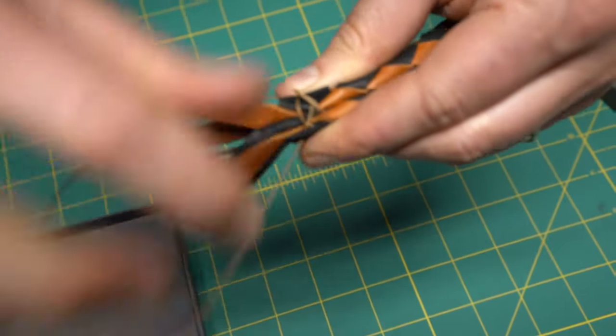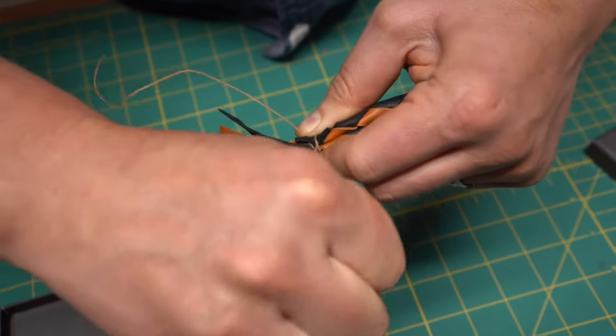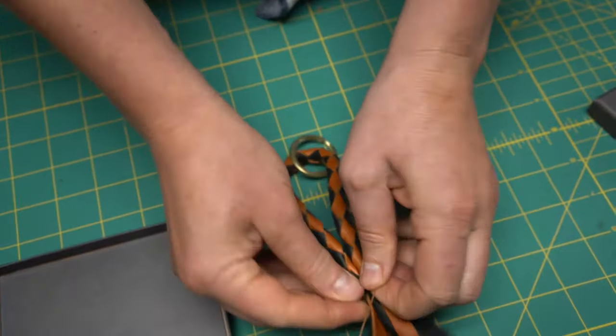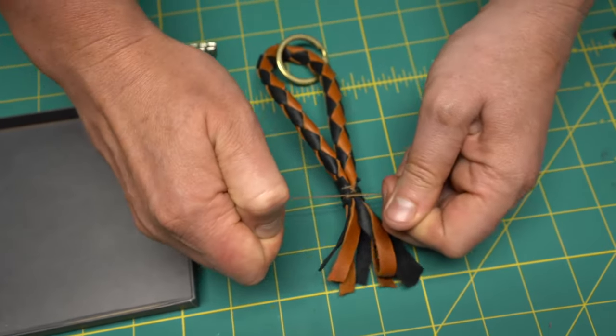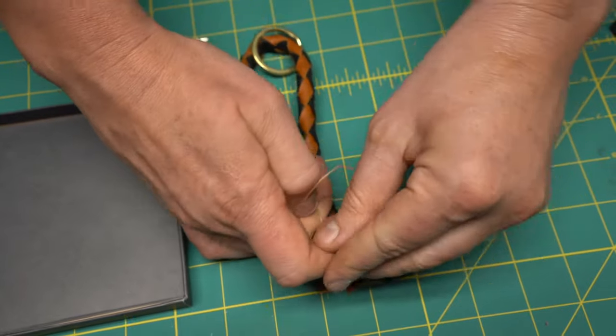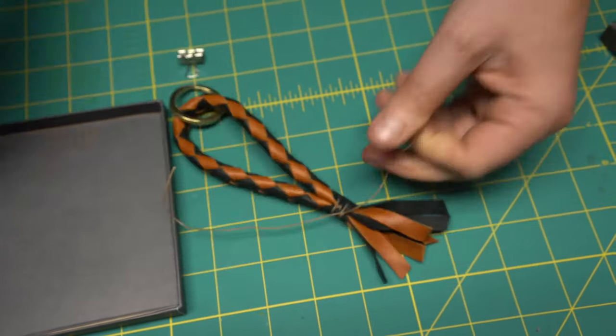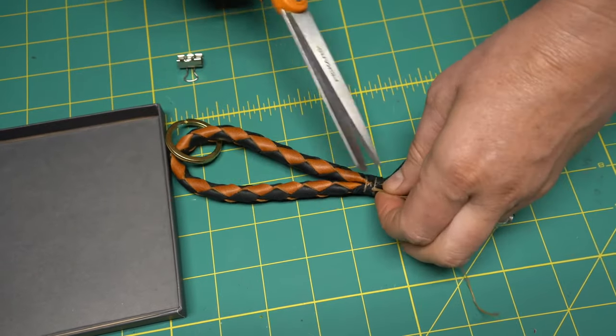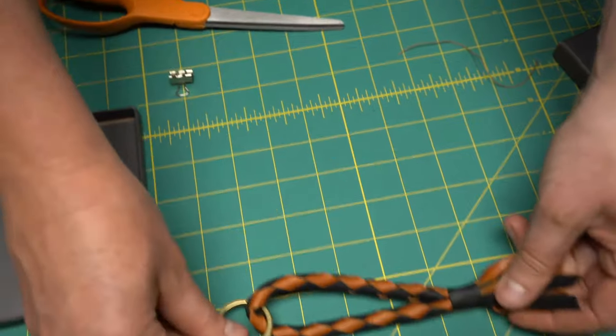So tighten it down pretty tight. And then I just like to finish it with a simple double knot at the end. And you could also put a drop of super glue on to hold it in place and then just cut off the ends of your string. And we are finished.